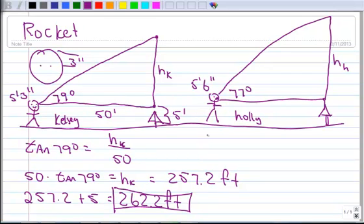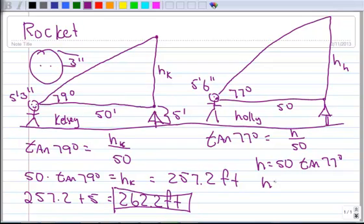Let's do Holly's, and then we're going to do it the same way. The tangent of 77 degrees is equal to h over 50. We also have 50 here as our adjacent side. So h is going to be equal to 50 times the tangent of 77 degrees. And that turns out to be 238.2 feet.